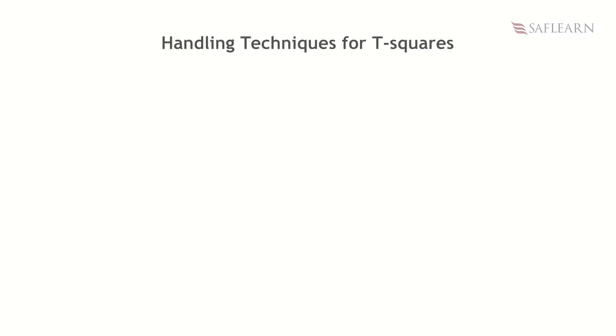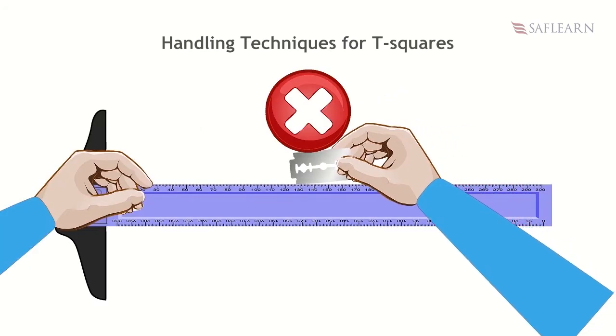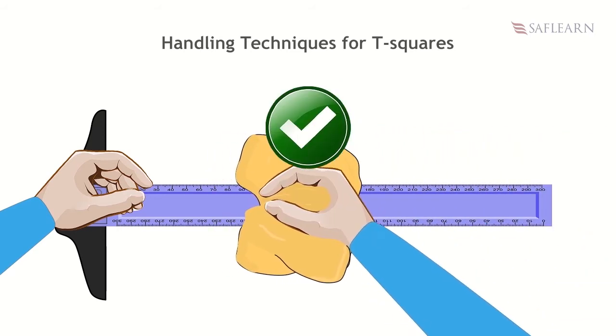For T-squares, never use the T-square as a walking stick or as a cane. Do not use pen knife or blade along the edge of the T-square. Always keep your T-square clean.